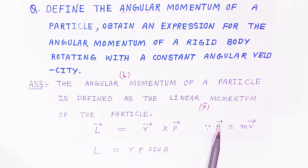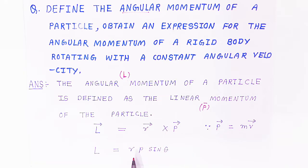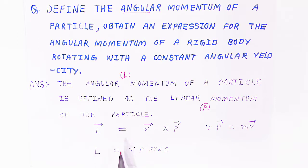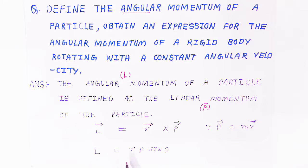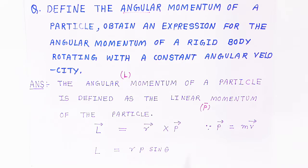The linear momentum is mass into velocity. If you want to write in terms of magnitude, L equals R·P·sinθ. So the angular momentum equals R·P·sinθ, where R is the radius, P is the linear momentum, and θ is the angle between them.